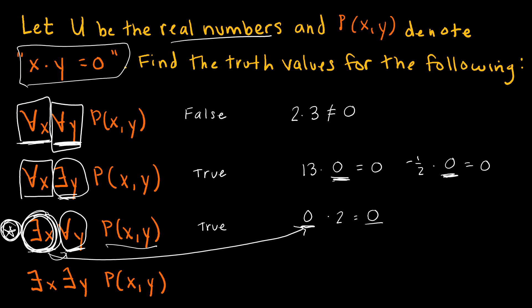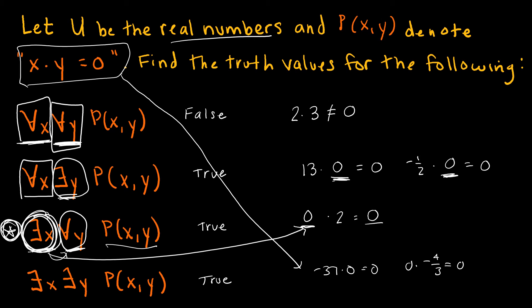If the statement were a little bit different, this type of quantifier order — 'there exists x such that for all y' — will quite often be false, because it requires fixing one x value such that it's true for all y values. Keep that in mind. For the last proposition, there exists some x and there exists some y. This is obviously true — we just need to show one example, such as negative 37 times 0 equals 0, or 0 times negative four-thirds equals 0.